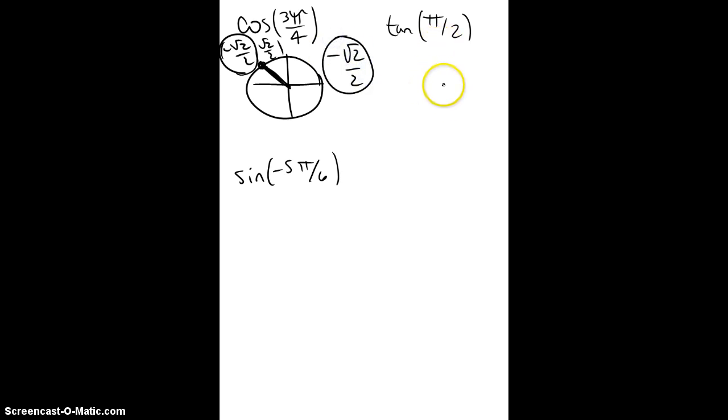Tangent of pi over 2, so again, you're going to look at your unit circle. Pi over 2 is 90 degrees, it's right here. This ordered pair is 0, 1, and tangent is sine divided by cosine. So if you take 1 divided by 0, that is undefined. So the answer to that one is undefined, I can't do that in math.